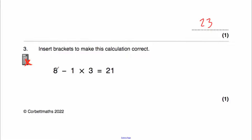Question 3 says: insert brackets to make this calculation correct — 8 subtract 1 multiply by 3 equals 21. Normally we'd do multiplication before subtraction: 1 times 3 is 3, then 8 take away 3 is 5, which isn't right. Now 21 is 3 times 7, so if we put brackets around the 8 take away 1, we do that first: 8 take away 1 is 7, then 7 multiplied by 3 is 21. So brackets go around the 8 take away 1.